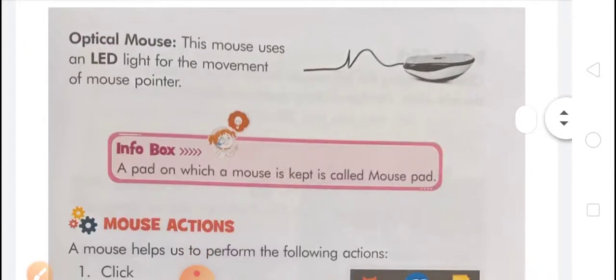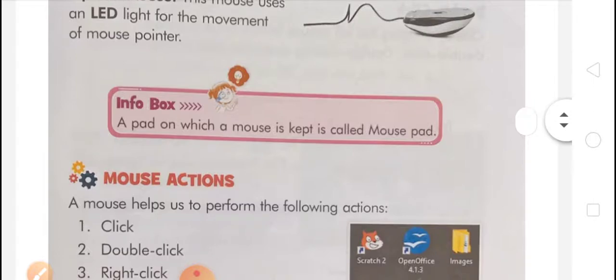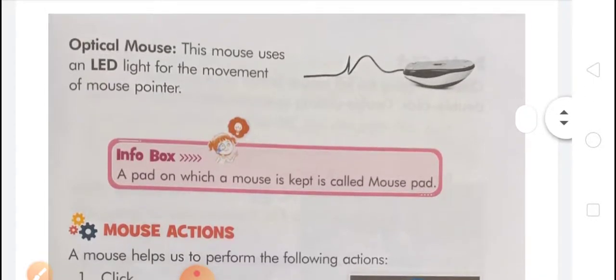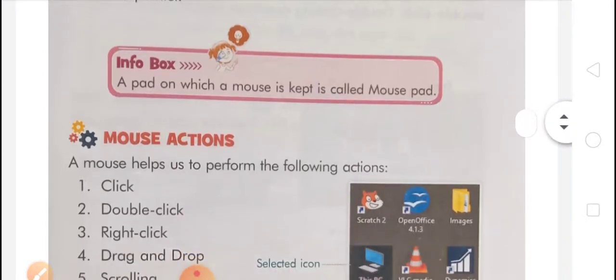You have learned that a mouse has two types: ball mouse and optical mouse. A ball mouse uses a ball made from rubber or metal on its underside for movement. An optical mouse uses an LED light for the movement of the mouse pointer. A pad on which a mouse is kept is called a mouse pad.